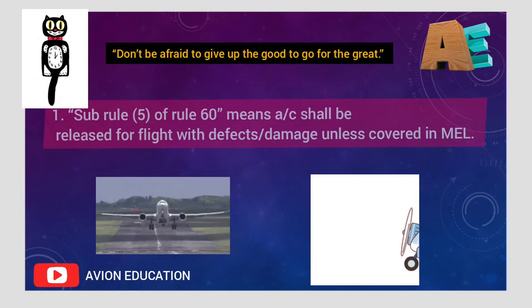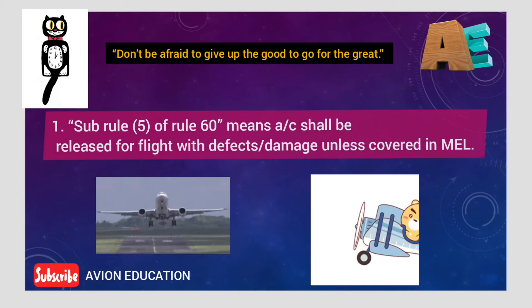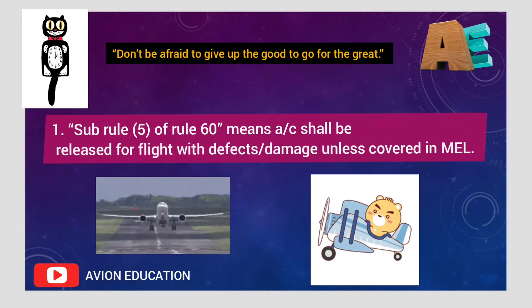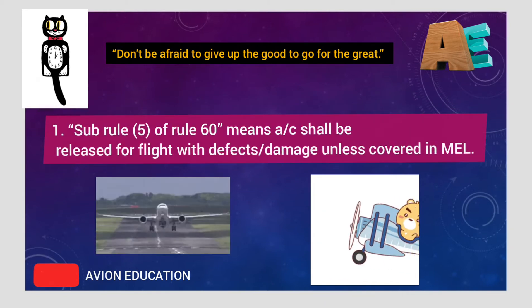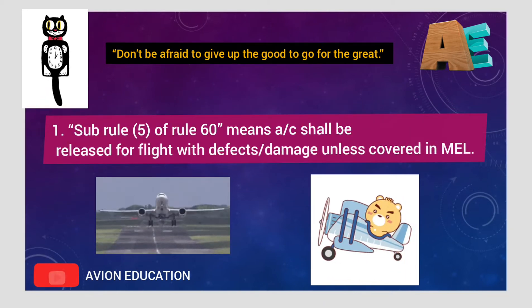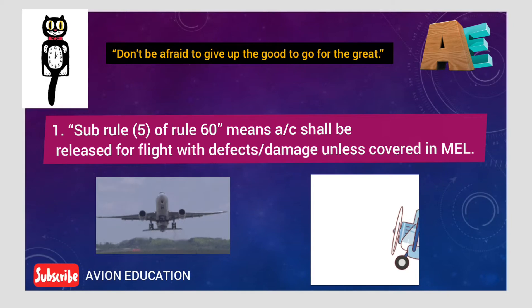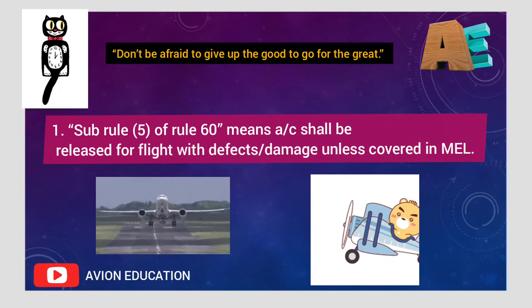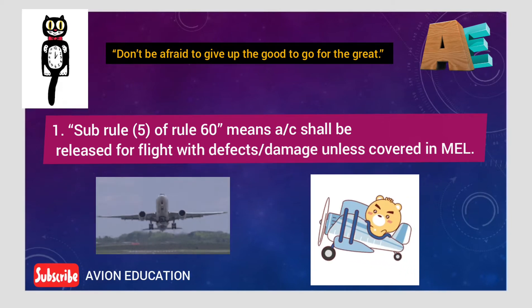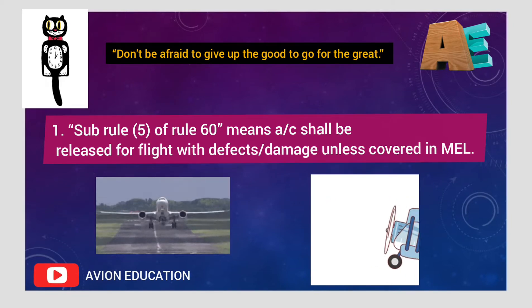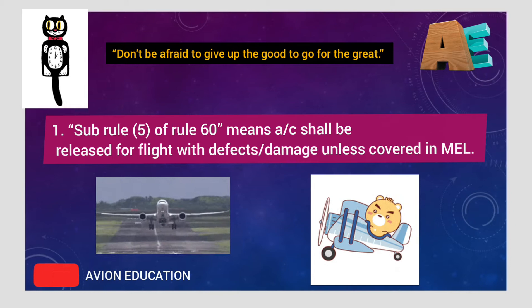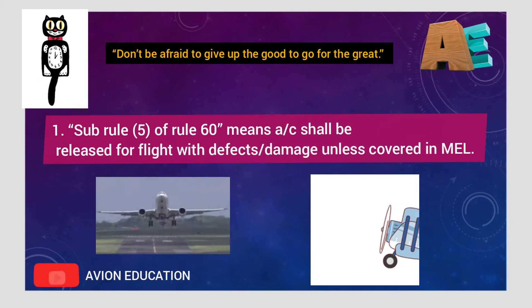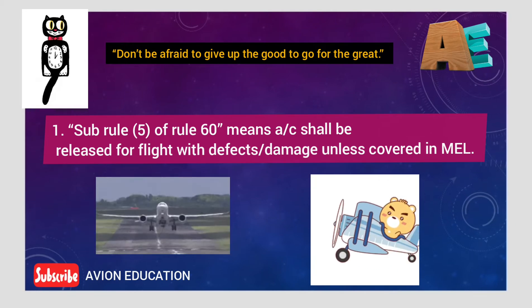The first point is Sub Rule 5 of Aircraft Rules 1937, which states that no aircraft can be dispatched with a defect or damage unless the defect has been covered in your MEL or Deficiency List.